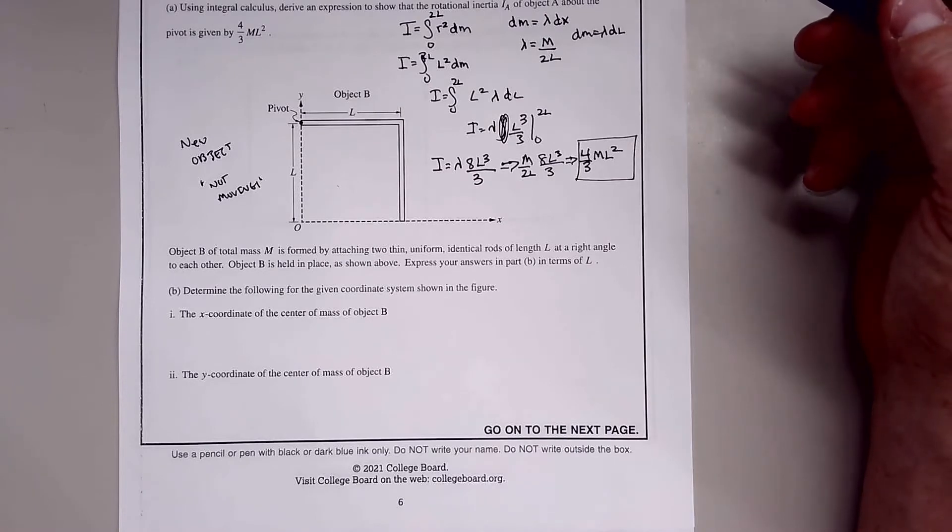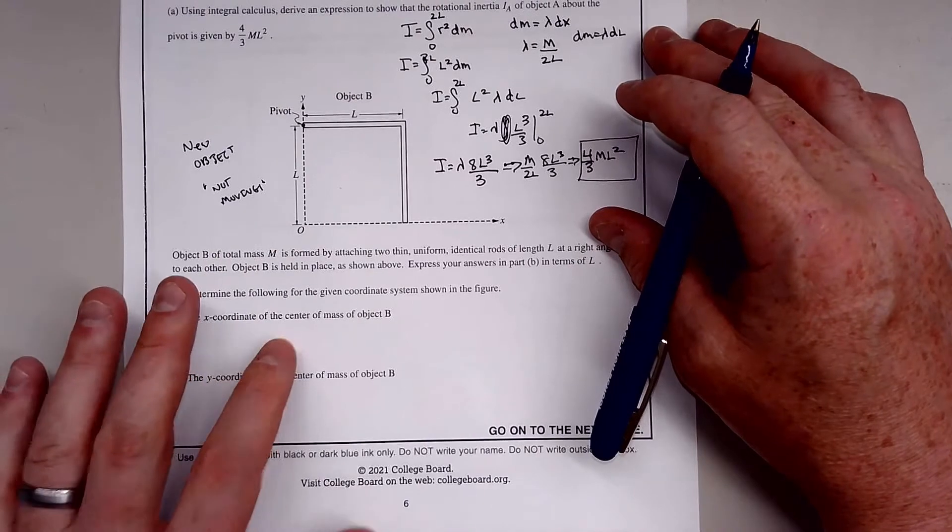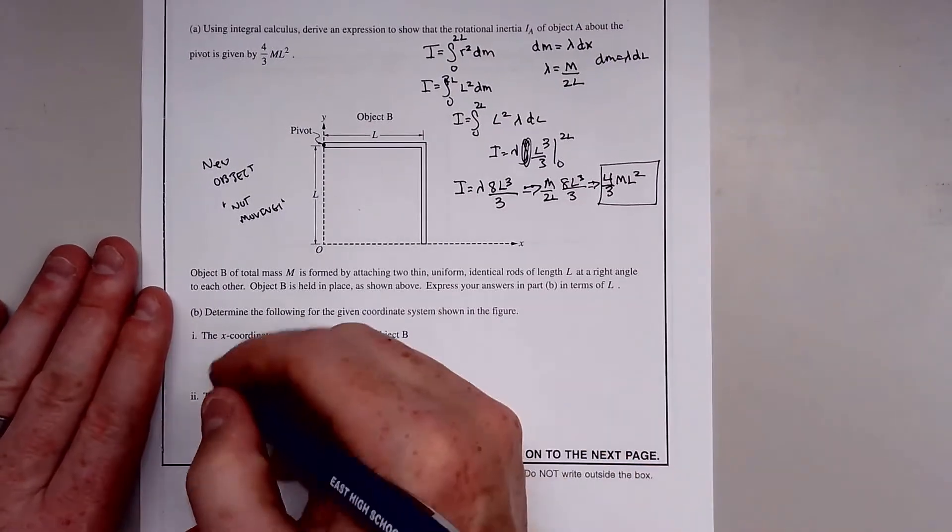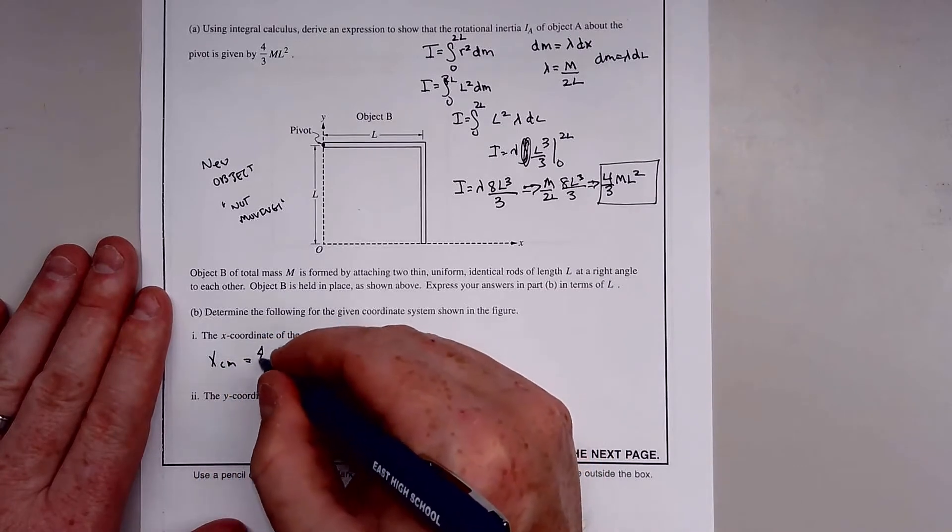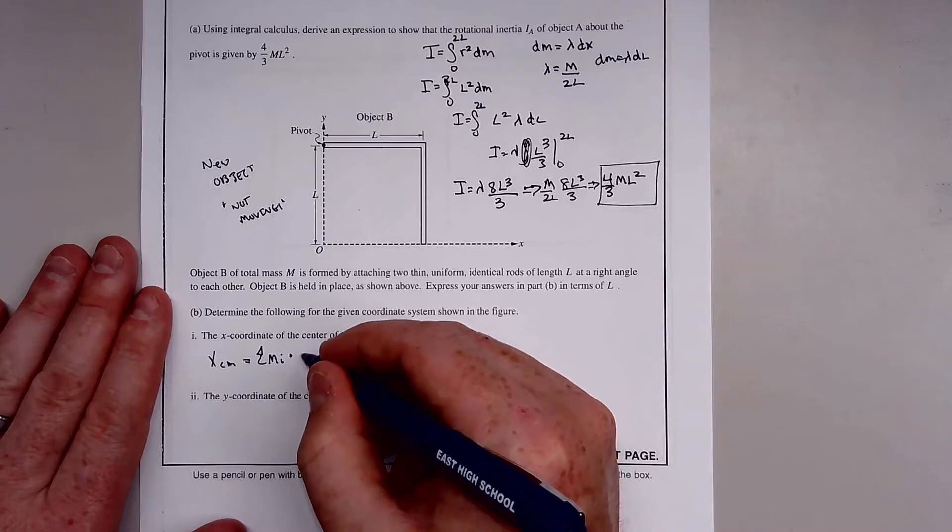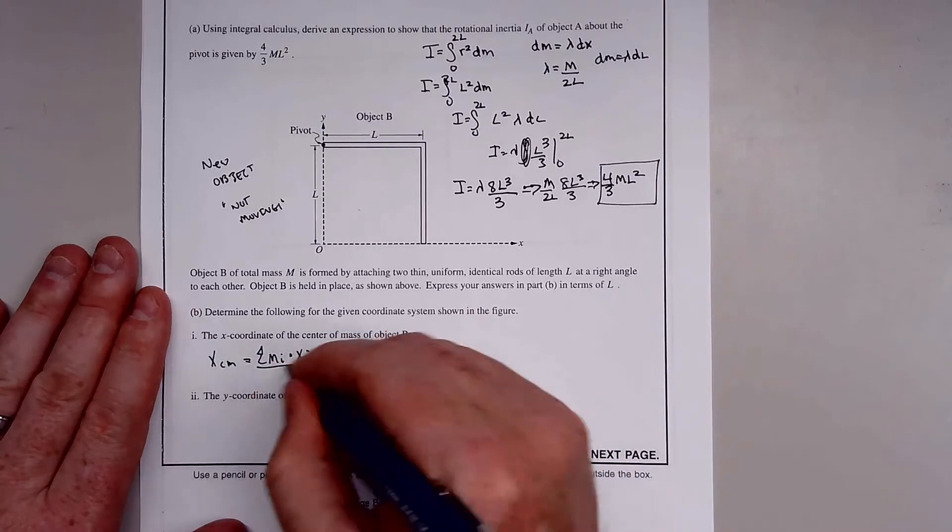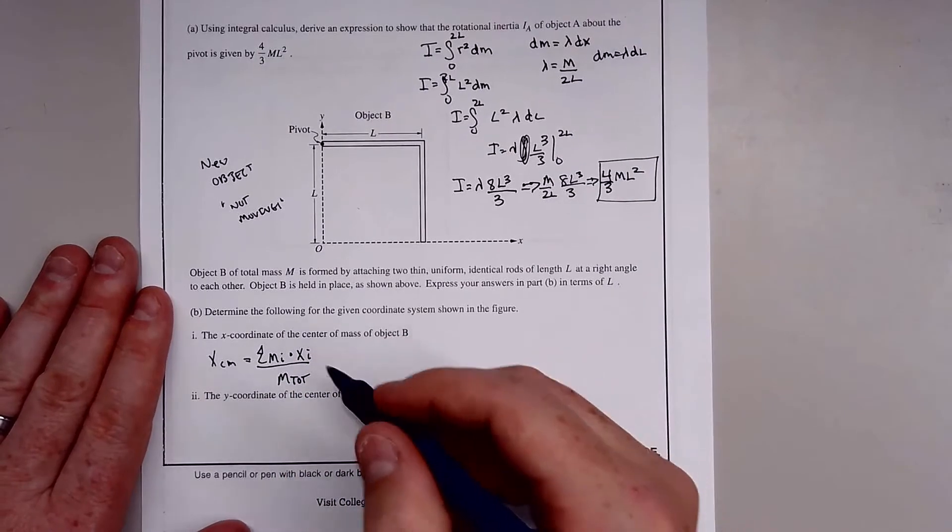Determine the x-coordinate of the center of mass of object B. This is just a center of mass calculation: summation of all the masses times their positions, divided by the total mass.